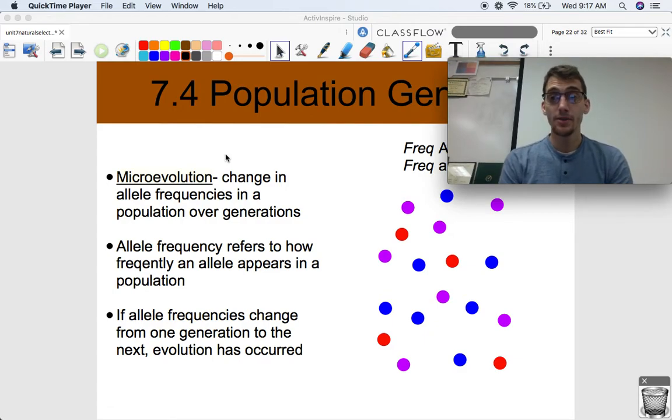Hi everybody, once again it is your AP Biology teacher, Mr. Poser. Today we are continuing our Unit 7 on Natural Selection by getting into Topic 7.4, which is on Population Genetics.